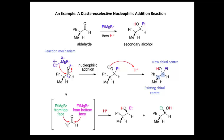The Grignard can approach this planar aldehyde group from the top or the bottom face. If the Grignard approaches from the top face, the ethyl group lands up on the top, as shown in this diastereoisomer. If the Grignard approaches from the bottom face, then the ethyl group lands up on the bottom of the molecule, represented in this other diastereoisomer. These two compounds are diastereoisomers resulting from attack from either the top or bottom face of the planar aldehyde group.